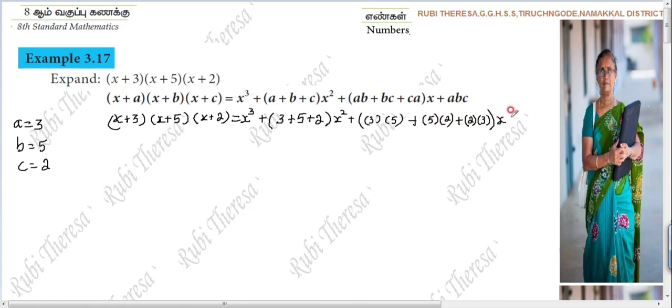AB plus BC plus CA into x. Plus ABC. Here also better to put bracket, 3 into 5 into 2.